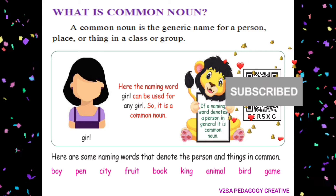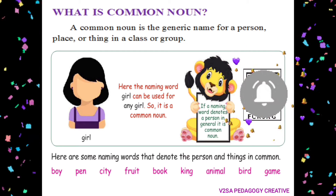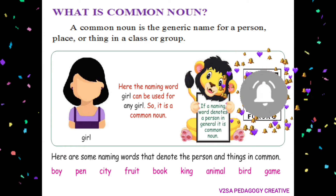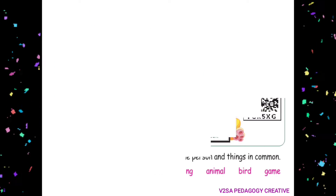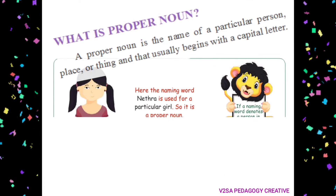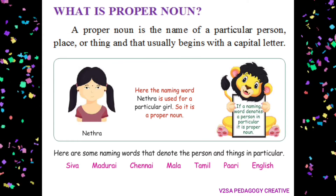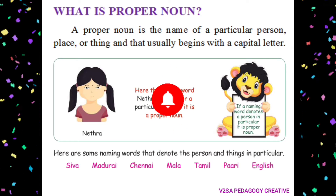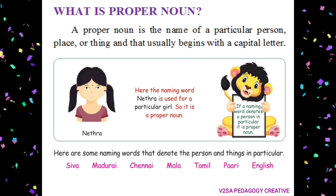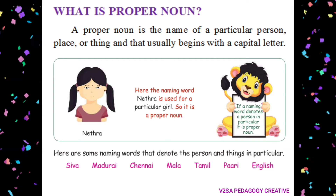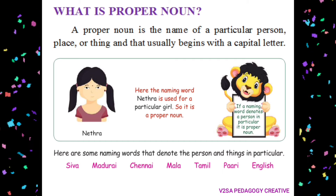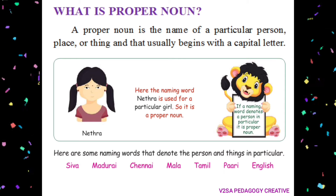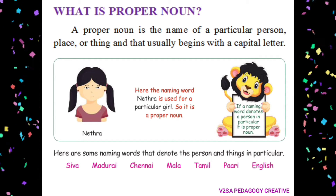What is the proper noun? The proper noun is the name of a particular person, place or thing, and it usually begins with a capital letter. That is the proper noun. Here, the naming word Netra is used for a particular girl, so it is a proper noun.